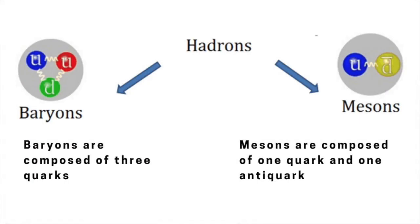All matter is composed of two types of fundamental particles: quarks and leptons. Quarks are the building blocks of hadrons, the two best known examples of which are protons and neutrons. Hadrons that are made of three quarks, such as protons and neutrons, are known as baryons. Hadrons that are made of two quarks — a quark and an antiquark pair — are called mesons.